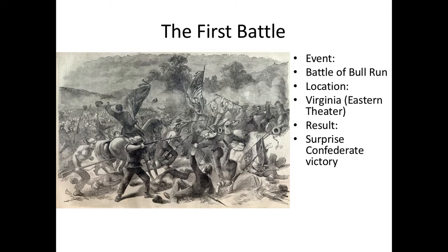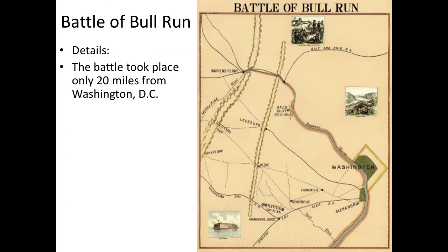The battle takes place only about 20 miles away from Washington D.C. Sometimes this battle is referred to as the Battle of Manassas because it took place near a town called Manassas, but we'll call it Bull Run. A lot of these battles had various names depending on which side was naming the battle. In this battle, it's going to be so close to Washington D.C. that civilians are going to come out to watch.